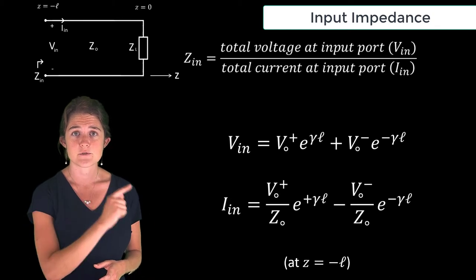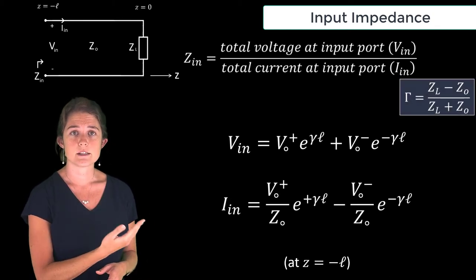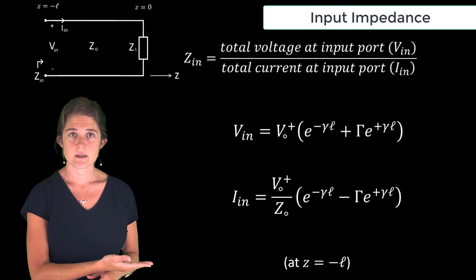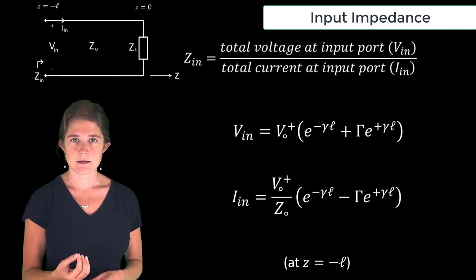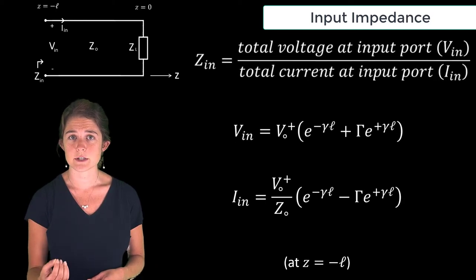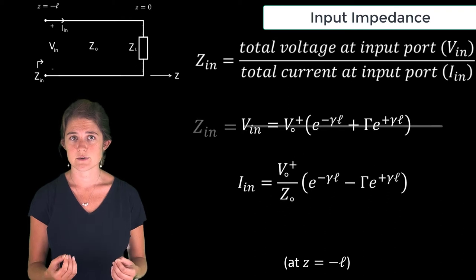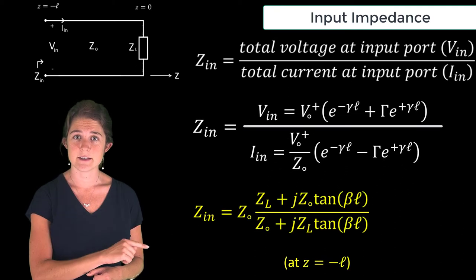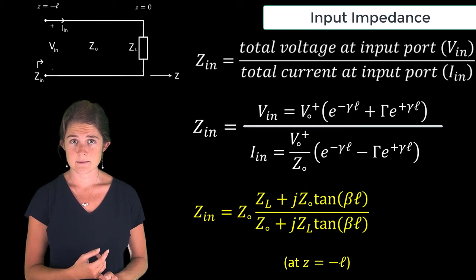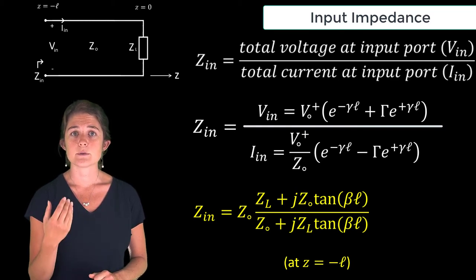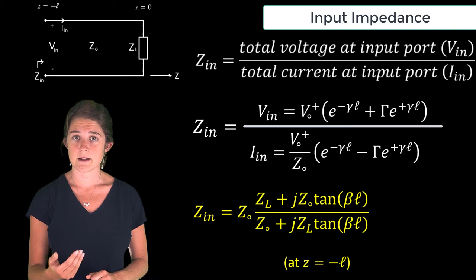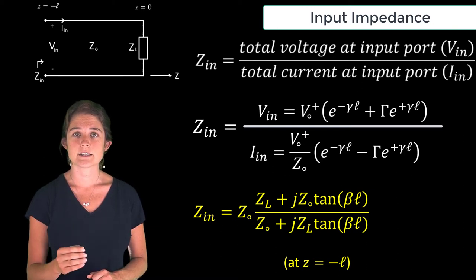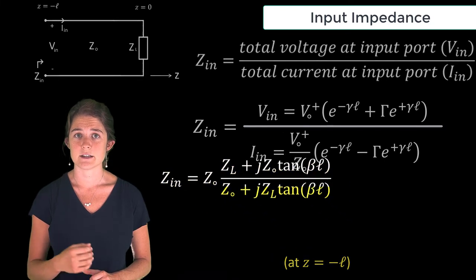If we plug in our definitions for gamma we can restate these equations like this. The input impedance ZN is the ratio of total voltage to total current so it looks like this. This can be simplified to this. ZN the input impedance equals Z0 times ZL plus JZ0 tangent beta L over Z0 plus JZL tangent beta L.